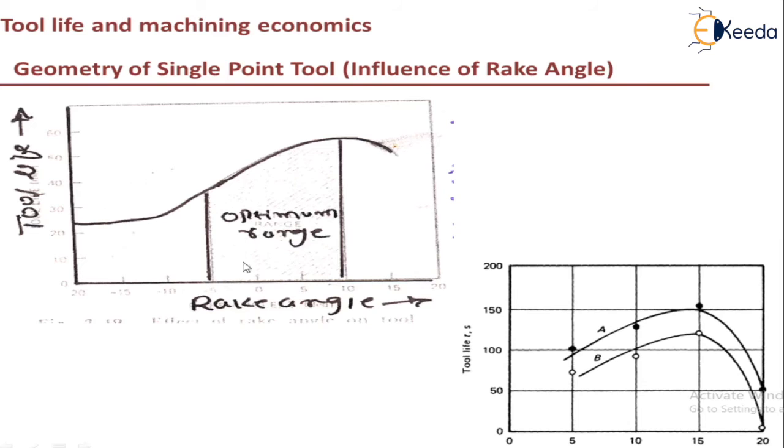And then, as you can see in this graph, it is shown as rake angle versus tool life. As the rake angle is increasing, it is increasing up to certain extent, that is optimum range, optimum value. And then if you further increase the rake angle, so then it will decrease the tool life. So that is also shown here. A is for higher cutting speed and B is for lower cutting speed. So you can see the influence of rake angle with the tool life.